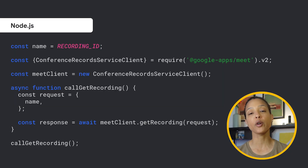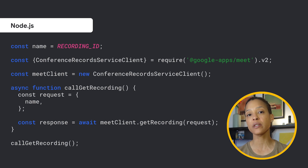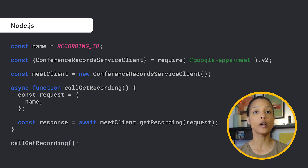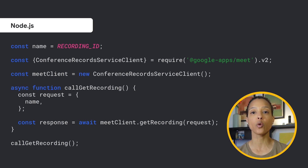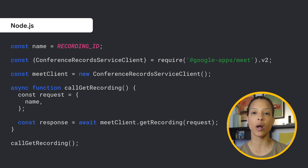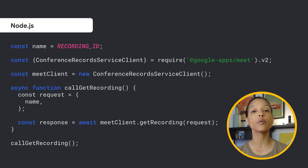For example, if a meeting participant wants to retrieve a specific Google Meet recording, you could use the get method on the recordings resource with the name path parameter. The method returns an instance of a recordings resource.